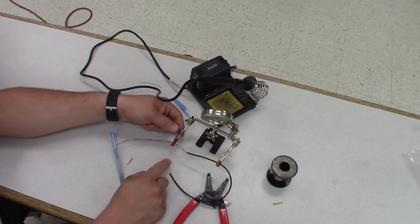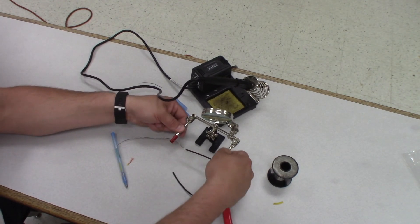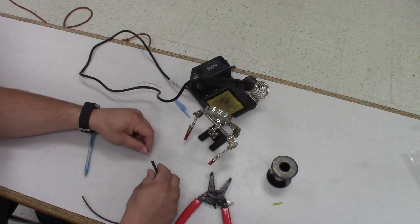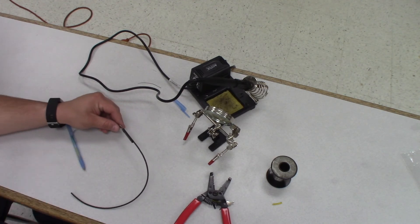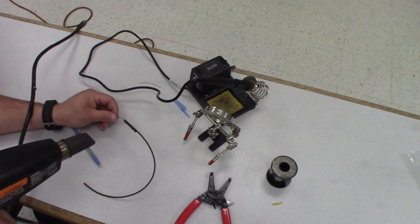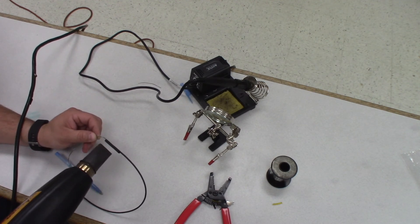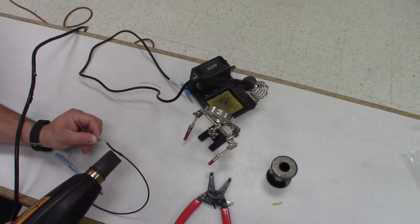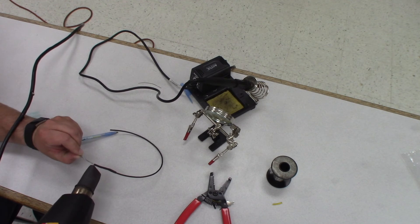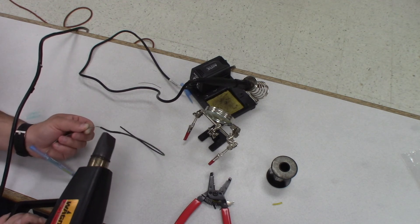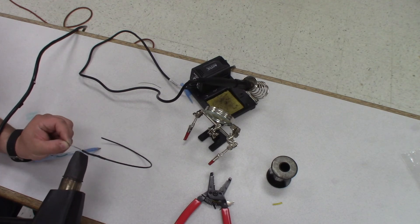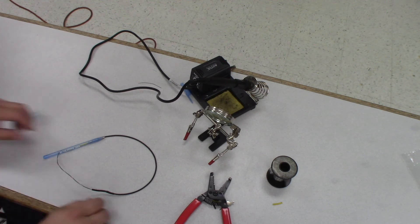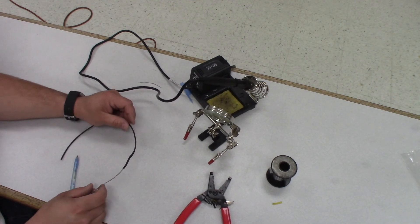Now we can take and grab some heat shrink, put some heat shrink tubing over the end of this. We'll take our piece of heat shrink tubing, slide that over, make sure it's covering the whole area here. We'll grab our heat gun.